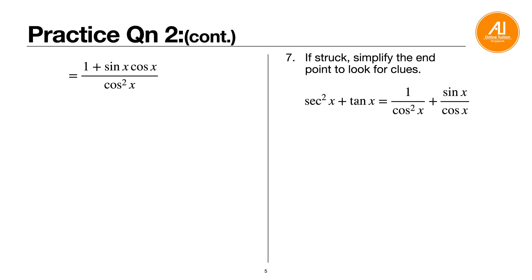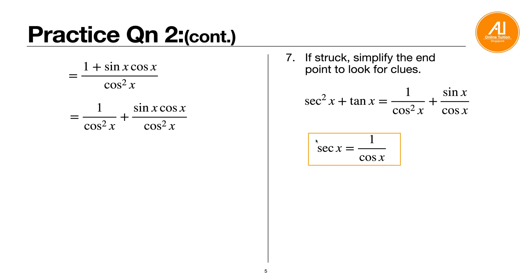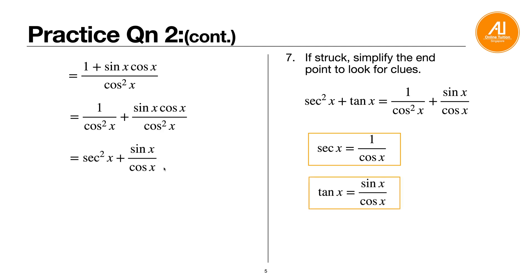The endpoint is secant squared x plus tangent x. Change to sine and cosine: secant squared is 1 over cosine squared, tangent is sine over cosine. Combine these and realize you can split the numerator fraction into two smaller fractions: 1 over cosine squared x plus sine x over cosine x. Notice that tangent squared x appears in both expressions, and comparing the two sides guides the next step.